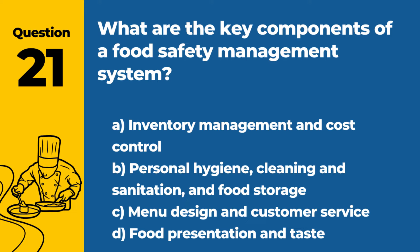Question 21. What are the key components of a food safety management system? a. Inventory management and cost control. b. Personal hygiene, cleaning and sanitation, and food storage. c. Menu design and customer service. d. Food presentation and taste. Answer b. Personal hygiene, cleaning and sanitation, and food storage. The key components of a food safety management system include personal hygiene, cleaning and sanitation practices, and proper food storage.